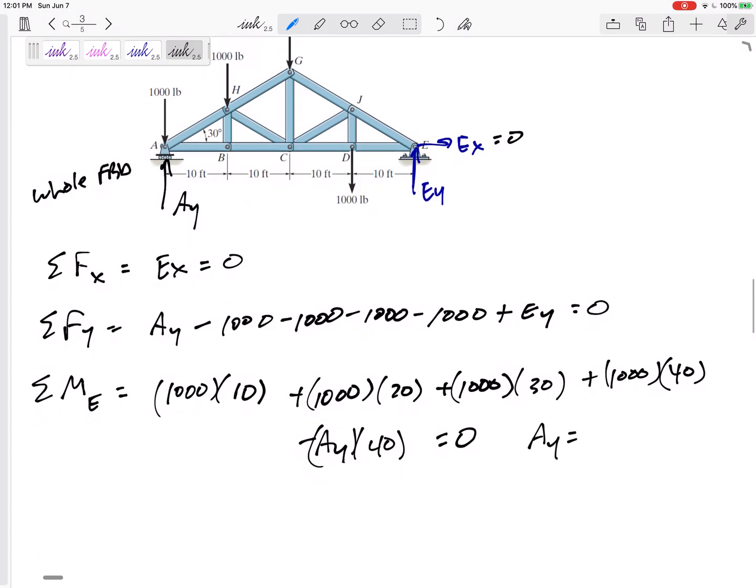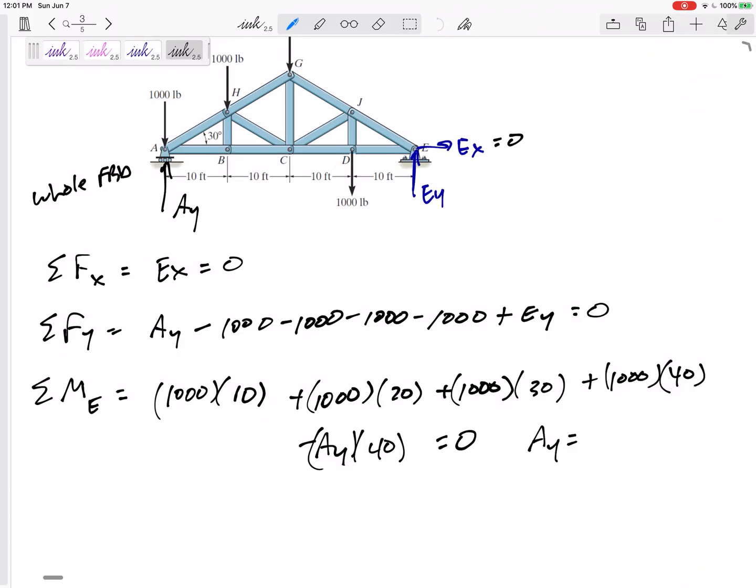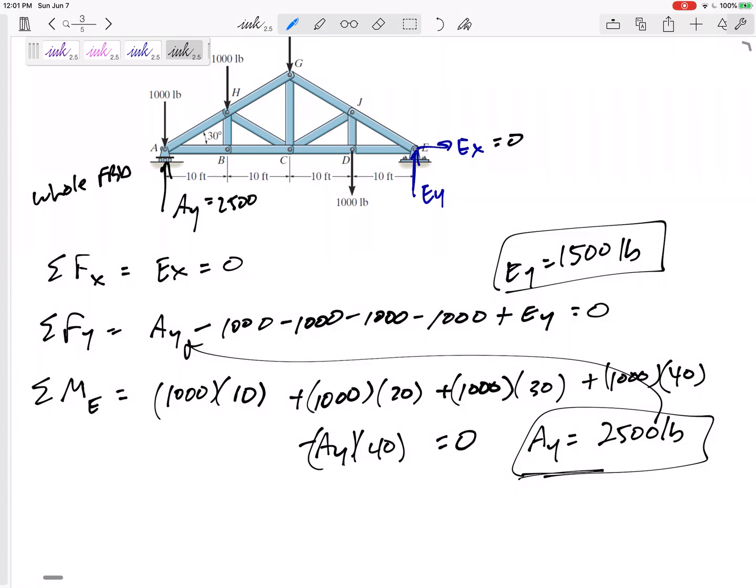That only has one unknown. I can solve for AY. I've got AY is equal to 2,500 pounds. Plug that back in up here. EY is equal to 1,500 pounds. And that's really the only one that I wanted. But especially if you're going to go back and double check your answer, AY is 2,500. And so if I came from this side of it using AY of 2,500, I should still get the same answers as what I'm going to be doing coming from this side.